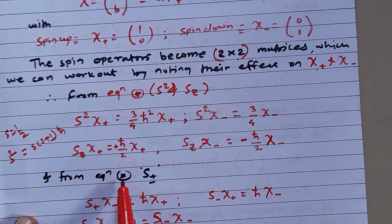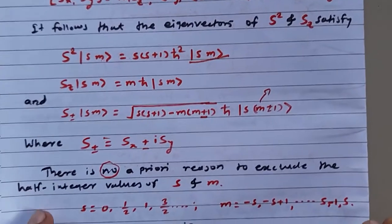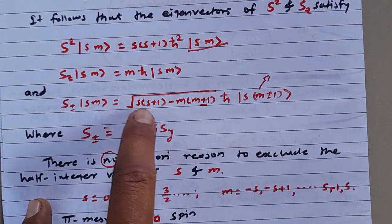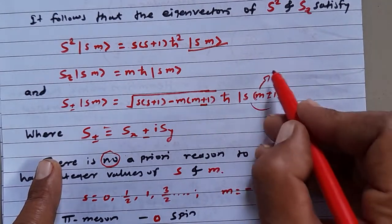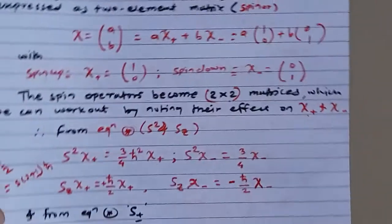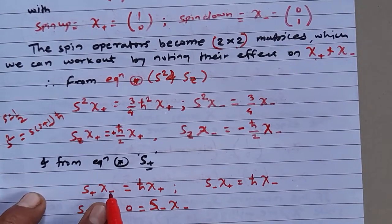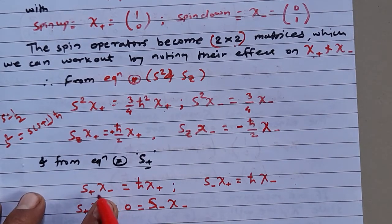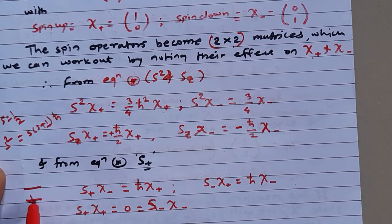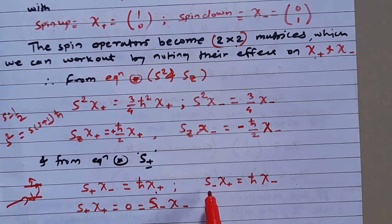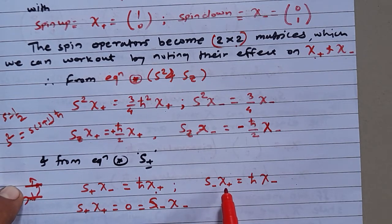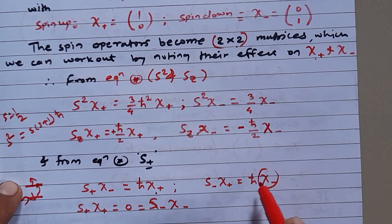Going back to the raising and lowering operators S+ and S-: when S+ operates on the |S,M⟩ state, it gives the root of S(S+1) - M(M±1) times ℏ, and M is increased or decreased by one unit. So S+ operating on χ-minus (spin-down) raises it to become spin-up. Similarly, S- operating on χ-plus reduces it to the spin-down system.